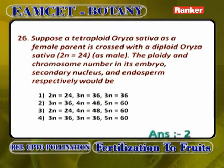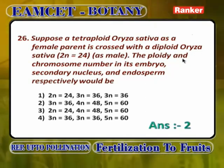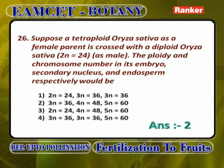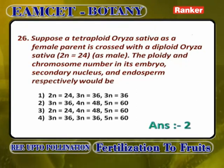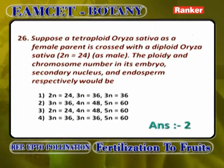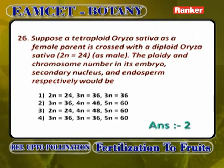Tetraploid Oryza sativa (female) crossed with diploid Oryza sativa (2N=24, male). From 4N female: egg is 2N; from 2N male: sperm is 1N; embryo = 3N = 36 chromosomes. Secondary nucleus from 4N female is 4N (2N+2N); endosperm = 4N + 1N = 5N = 60 chromosomes. Answer: embryo 3N=36, secondary nucleus 4N=48, endosperm 5N=60.